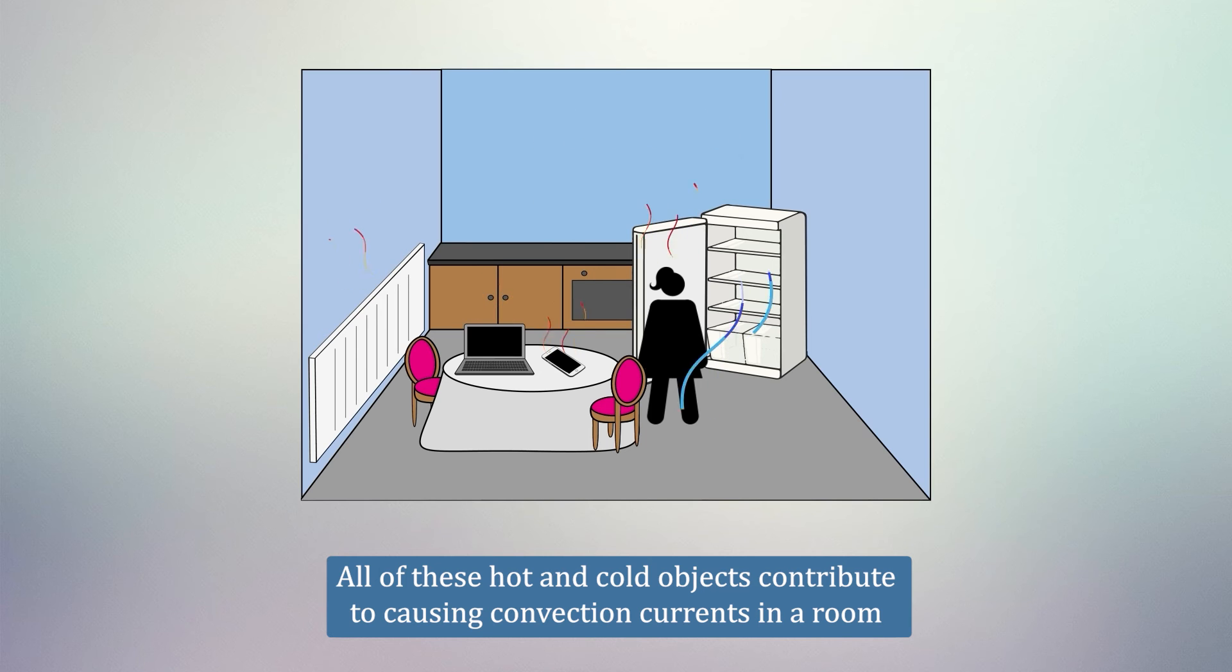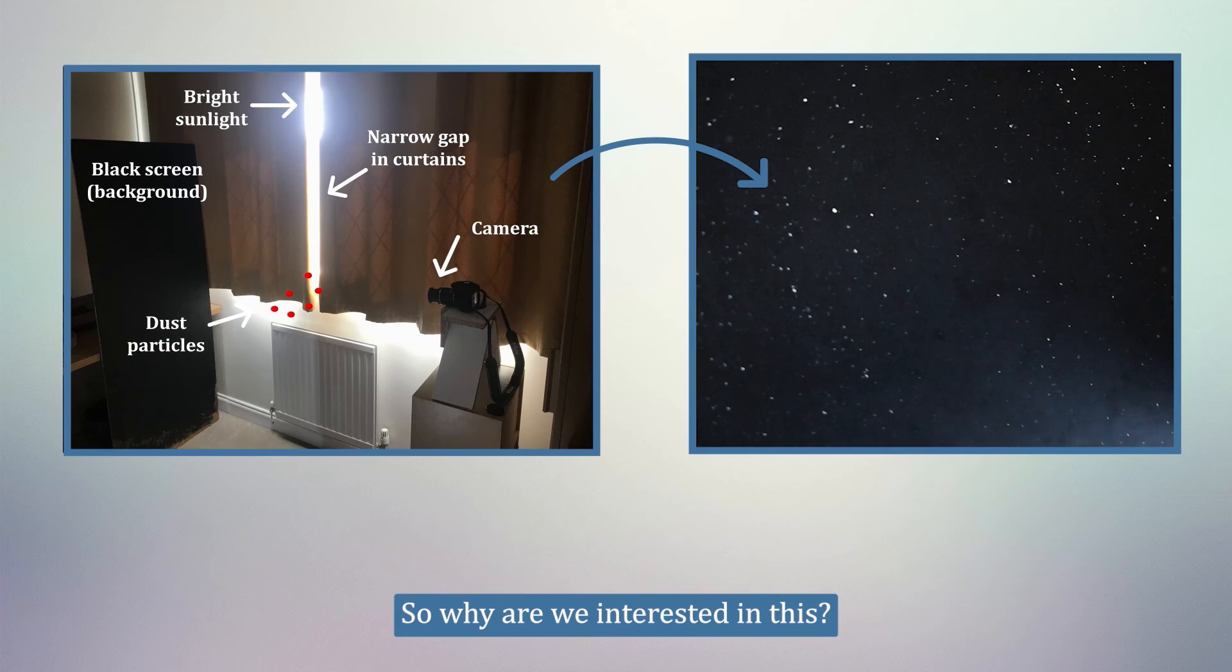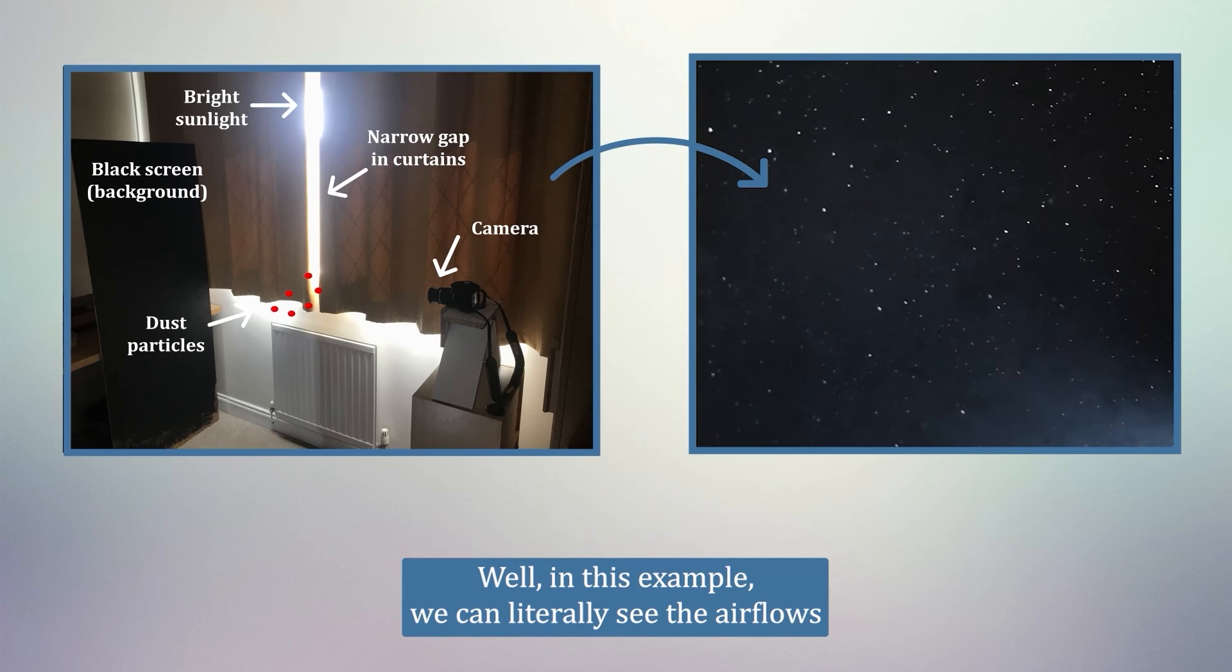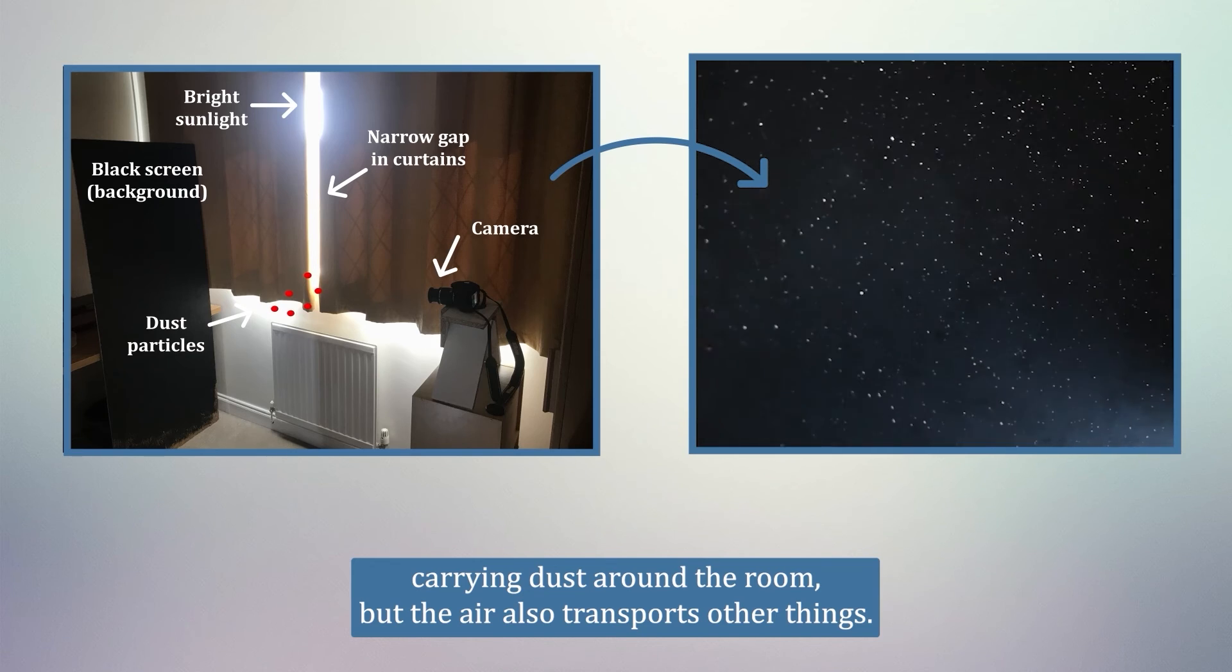All of these hot and cold objects contribute to causing convection currents in a room, which refers to the overall flow in a room caused by temperature differences. So why are we interested in this? Well, in this example, we can literally see the air flows carrying dust around the room, but the air also transports other things.